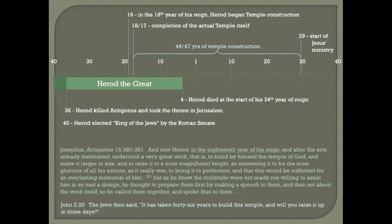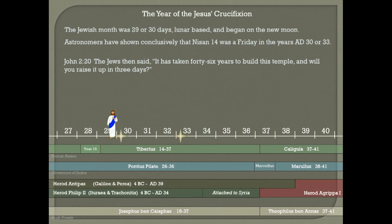So if we take 46 or 47 years from the end of the core temple construction up to when they're making this statement, that puts us right about the year AD 29 when they were speaking. This fits with what we looked at earlier. It seems appropriate to place the beginning of Jesus's ministry in AD 29 — based both on John the Baptist beginning his ministry in the 15th year of Tiberius, and on the Jews' statement about the length of construction of Herod's temple.